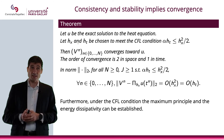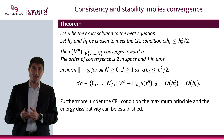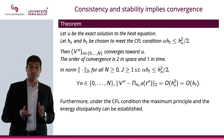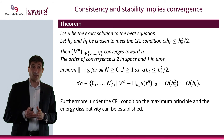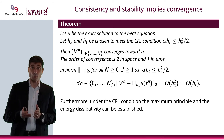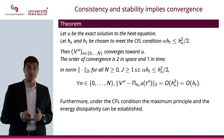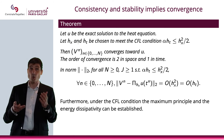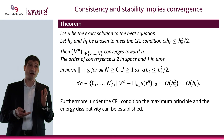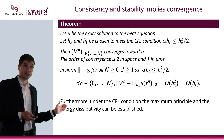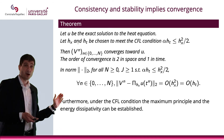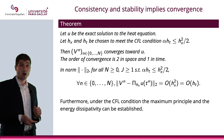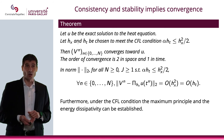Theorem: as you know, consistency and stability imply convergence. Let u be the exact solution to the heat equation, and let h_x and h_t be the discretization steps satisfying the CFL condition — that is, α·h_t < h_x²/2. Then v^n converges toward u with order two in space and order one in time. In other words, the norm of v^n minus the projection of u onto the grid is O(h_x²) and O(h_t).